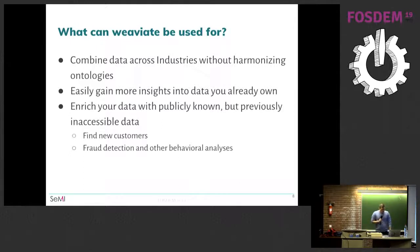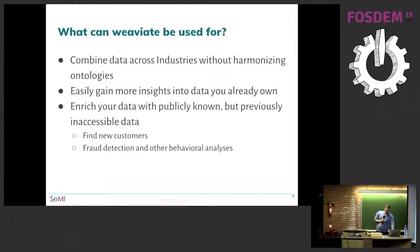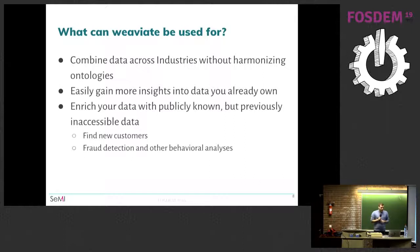You can of course also gain more insights into the data you already have standalone — you don't have to use VV8 as part of a network. You can enrich your data, for example with Wikipedia. To find more customers: if you have data about your most profitable customers, you can identify what aspects make them your best customers. You want to keep that data private, but additionally it would be nice to have a database of potential customers — especially in B2B, a structured list of companies — that you can apply your own criteria to.